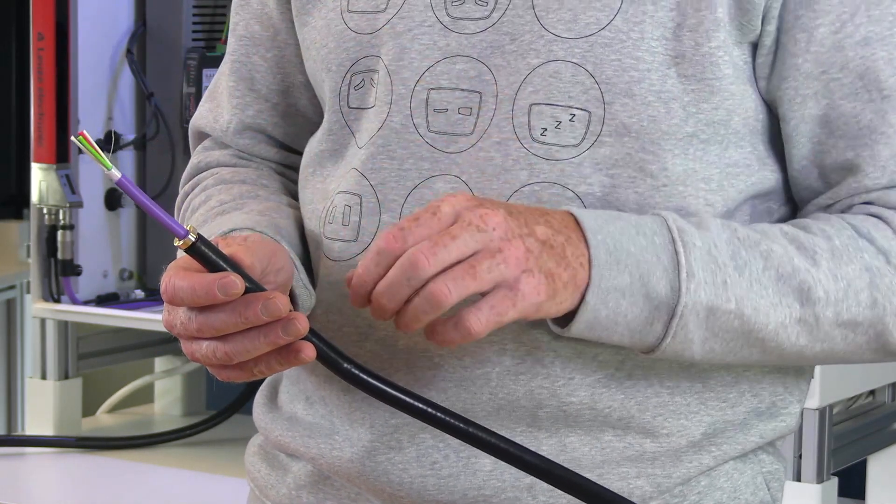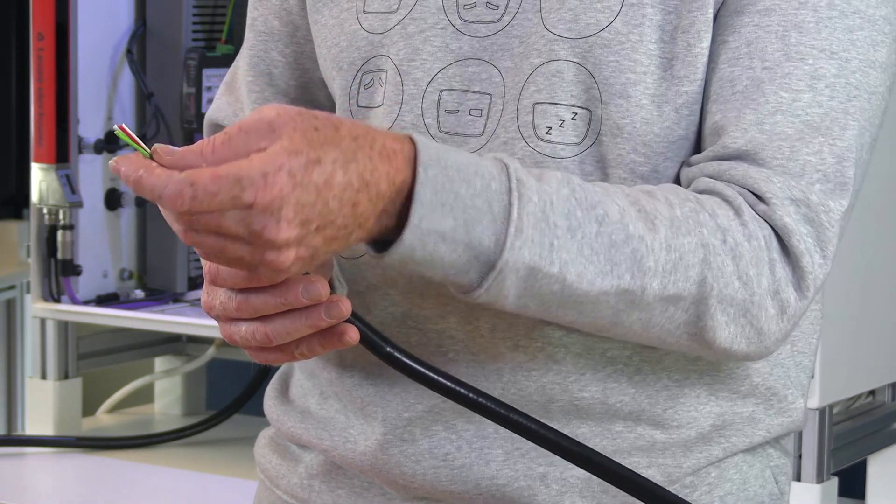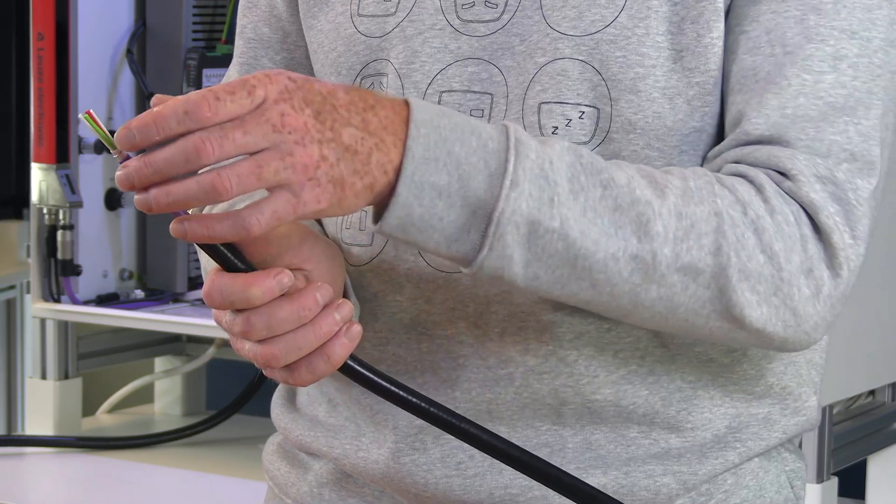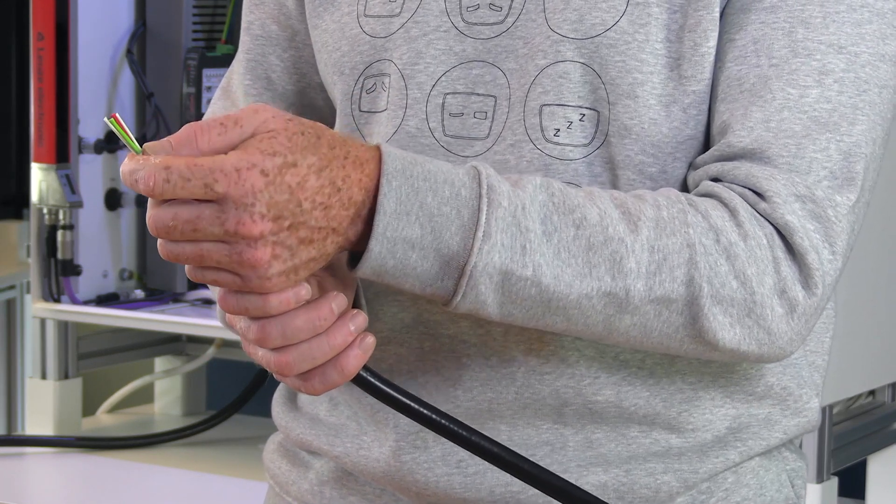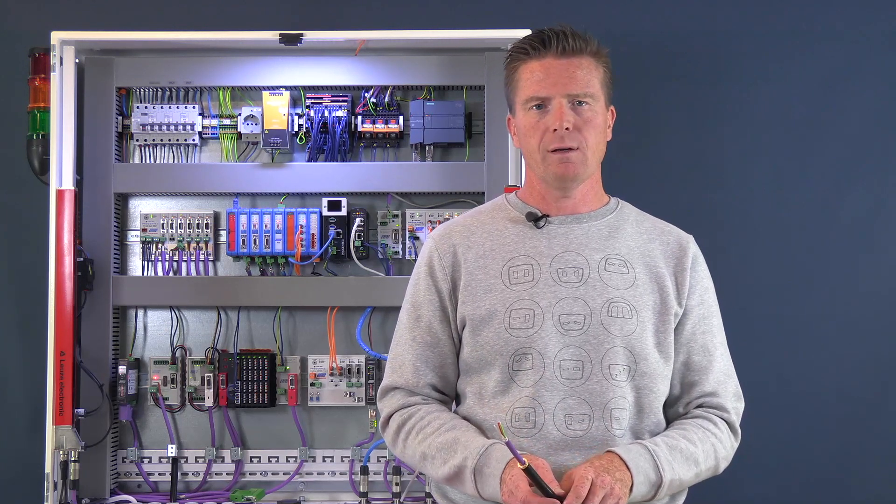And also there is a shield wire. You can turn that, do it like this, to connect it to the shield of your Profibus connector. And then also your Profibus cable is shielded. And for the rest, to strip down the cable or to mount it, is exactly the same thing.